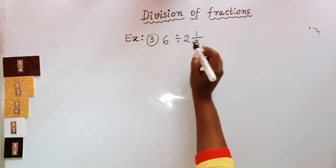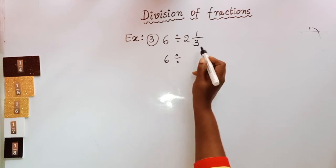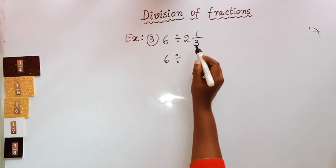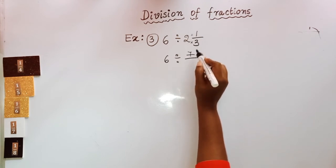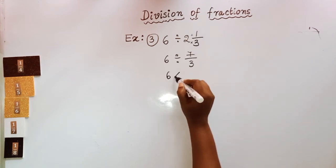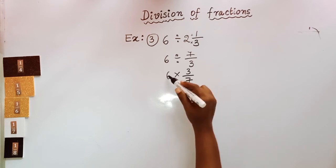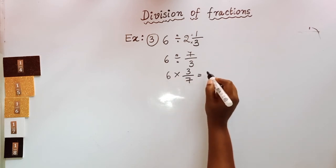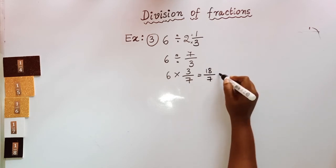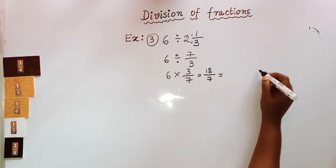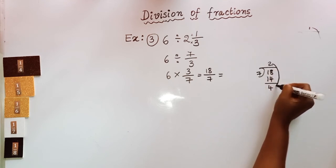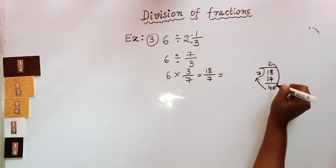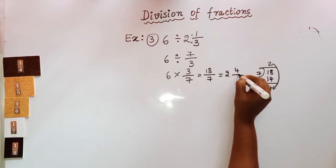Take a mixed fraction example: 6 divided by 2⅓. First convert the mixed fraction to an improper fraction — keep the division sign, then convert 2⅓: 3 × 2 = 6, plus 1, gives 7/3. Now while dividing, take the reciprocal of the second fraction and multiply: 6 × 3/7 = 18/7. Changing to a mixed fraction: 7 × 2 = 14, remainder 4. So 18/7 equals 2 and 4/7.